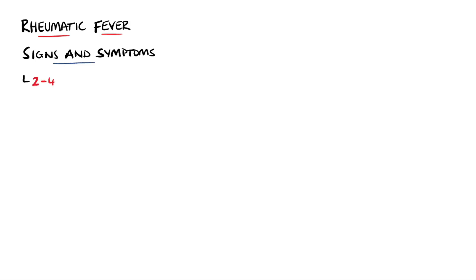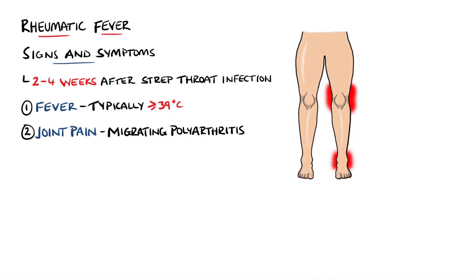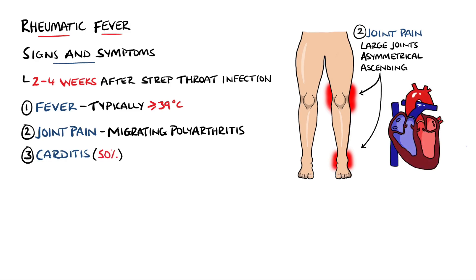Cases of rheumatic fever typically occur 2-4 weeks after a throat infection with streptococcal bacteria. The most common findings include a fever, often high-grade above 39 degrees Celsius. Joint pain is a very common complaint, and the most indicative type is a migrating polyarthritis, which typically affects the large joints mostly asymmetrically in the lower limbs and then migrating upwards. In approximately 50% of cases, there is also cardiac involvement, which is mostly carditis.